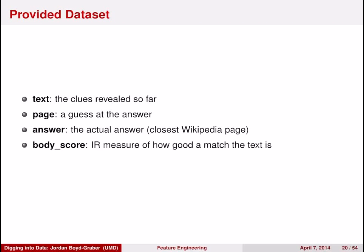So I'll be providing a data set that has the following information. First, the text of the question so far. So this is a question at some point that's been interrupted. And then it will also have an associated Wikipedia page that could be the answer to the question. Now, sometimes that guess, the page, will match the true answer, which is a Wikipedia page that is actually corresponding to the right answer for the question that's been interrupted. And I'll also give you the score of an IR system that looked at the Wikipedia page and said, how good is this page that we're guessing a match for the text of the question?